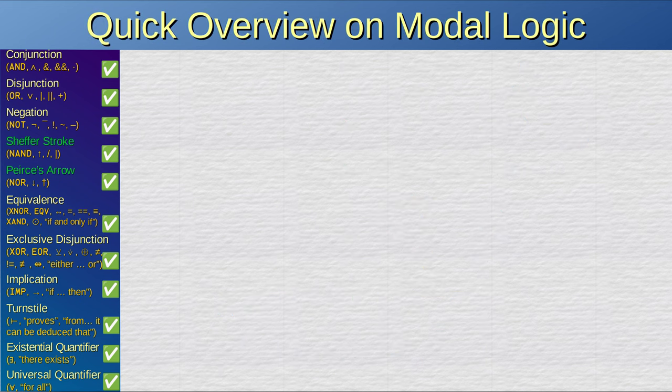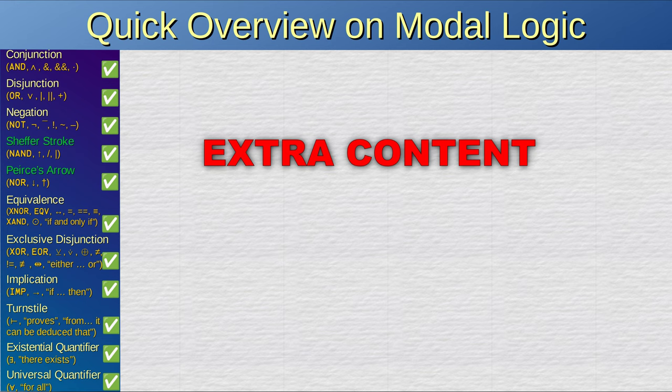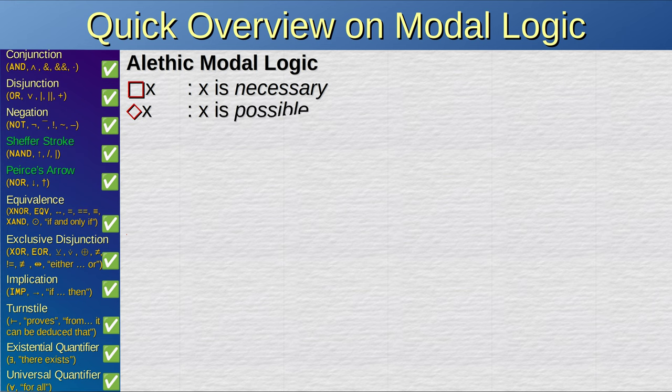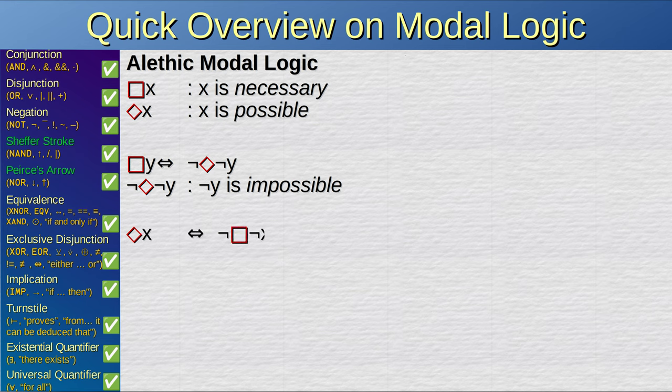There are also other logic expressions that cannot be expressed in truth tables. This is going to be just a quick overview. Within alethic modal logic, the square symbol is used to denote that something is necessary. A diamond symbol denotes that something is possible. If it is necessary that y is true, then it is not possible that y is false. Not y is impossible. If it is possible that x is true, then it is not necessary that x is false.